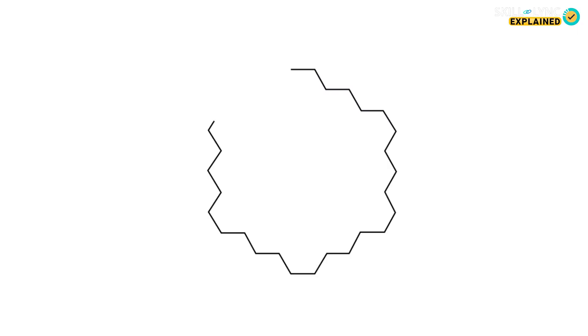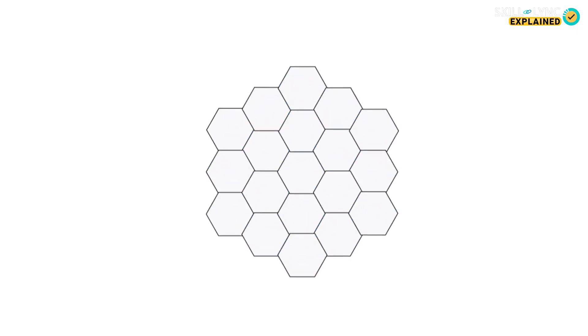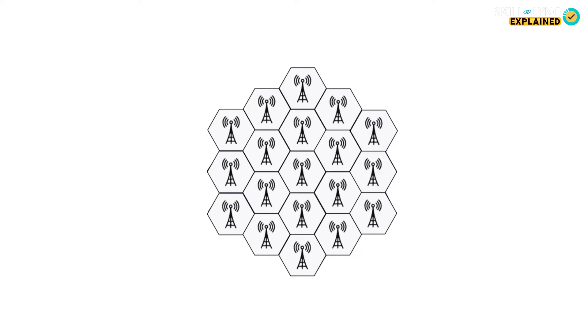In 1G technology, the message was encoded into a continuous electrical signal for transmission. The entire geographical area that had to be serviced was divided into cells, and each of these cells had a dedicated channel for transmission and reception of signals. This allowed many users to connect to the network at the same time.